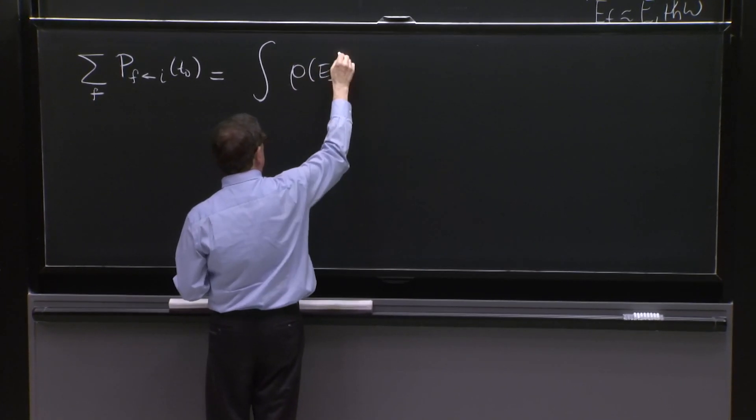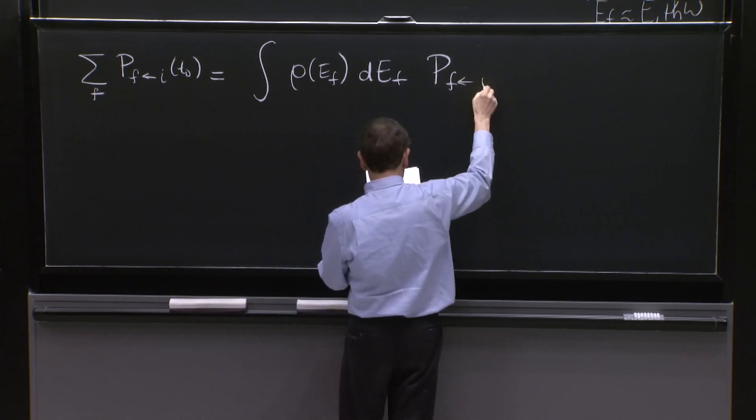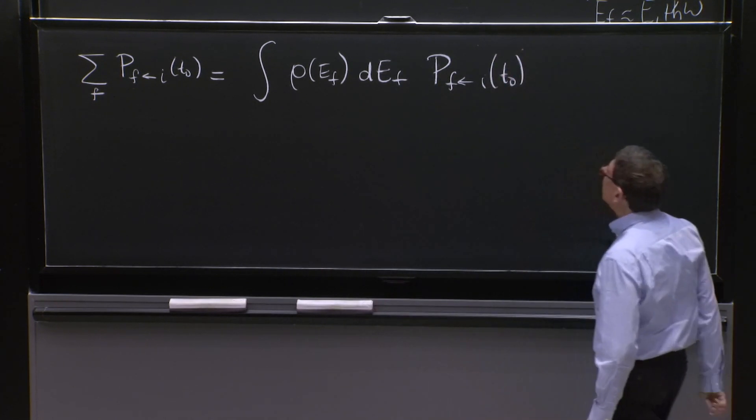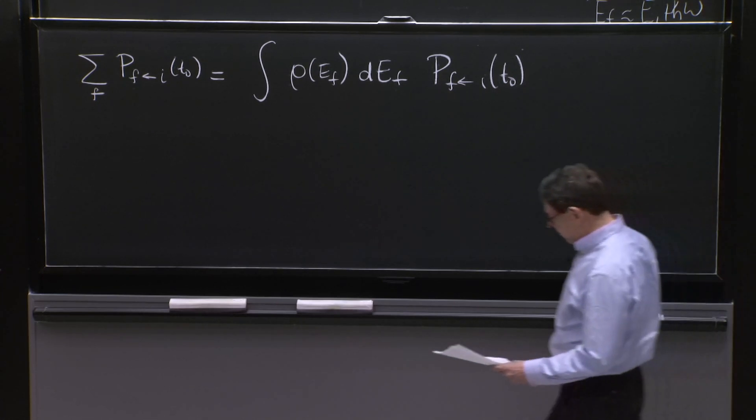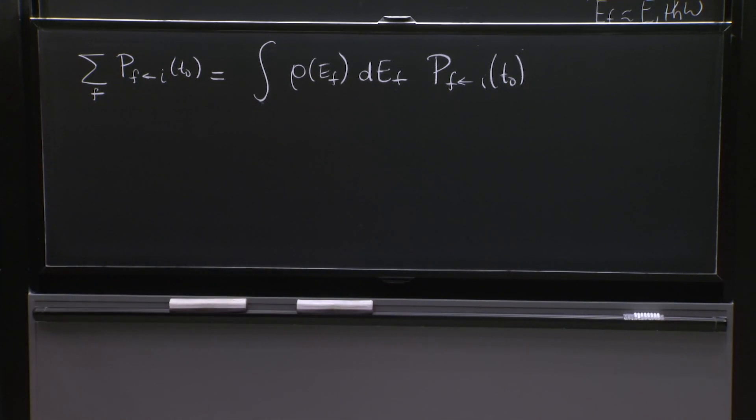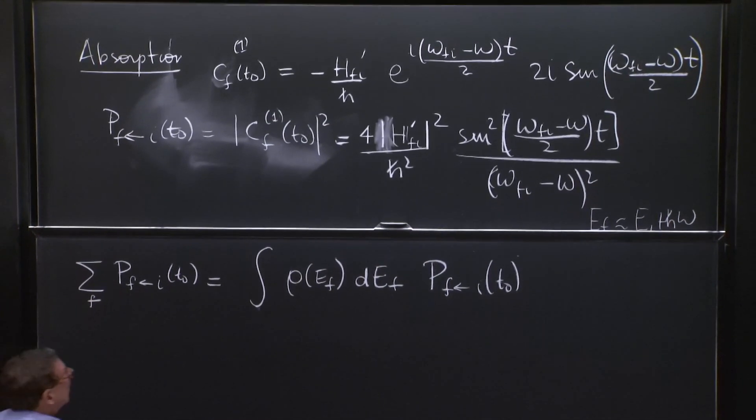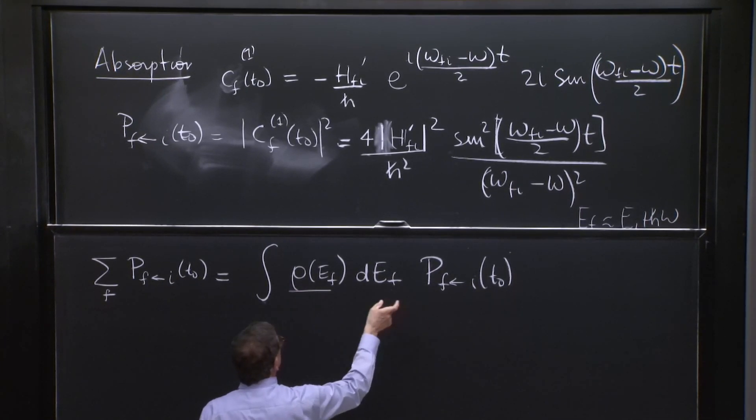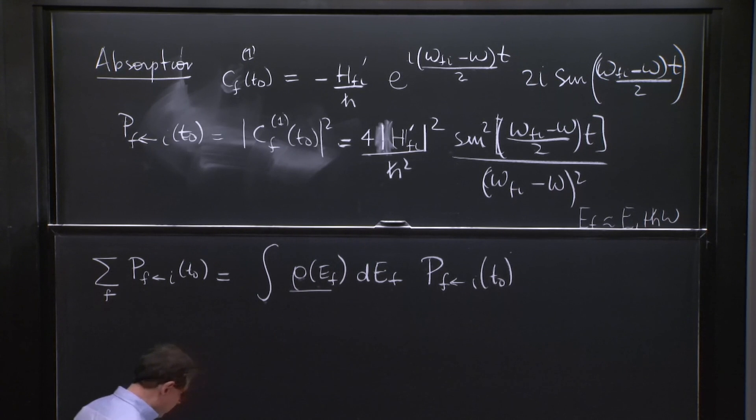And we'll write it as the integral over the set of states, rho of e final d e final probability final to initial of t0. And this is the same calculation we were doing before. And for this calculation, we just substitute what pfi is.